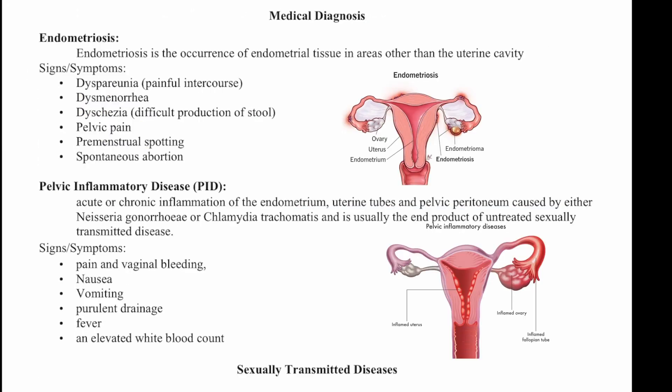Endometriosis is the occurrence of endometrial tissue in an area other than the uterine cavity. Signs and symptoms include painful intercourse, dysmenorrhea, dyschezia (difficulty producing stool), pelvic pain, premenstrual spotting, and spontaneous abortion.